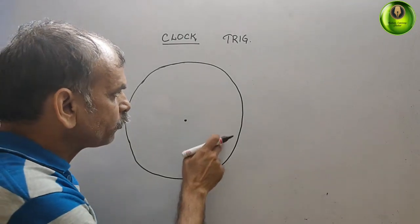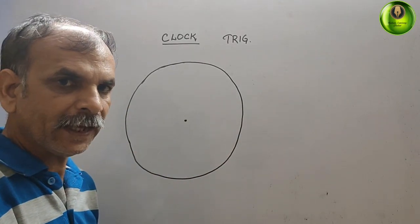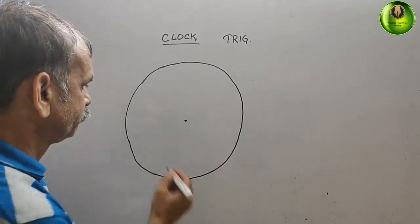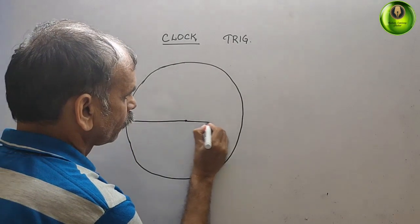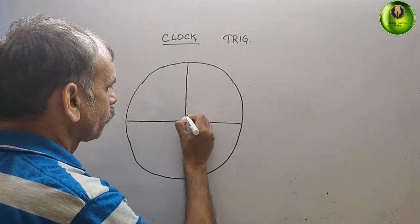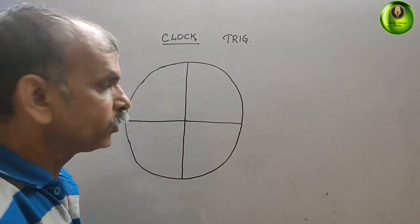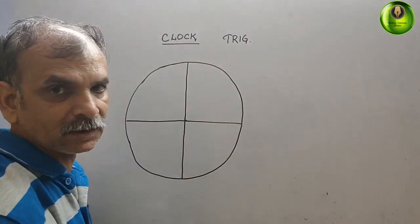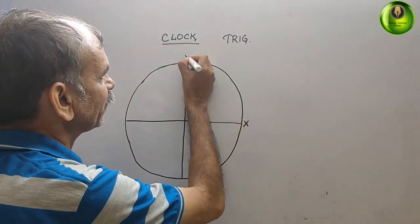What we have to do is just make a circle and divide it into four parts. This is your x-axis and this is your y-axis.